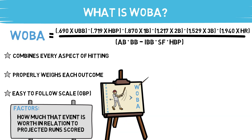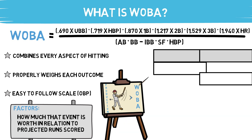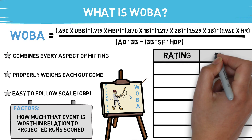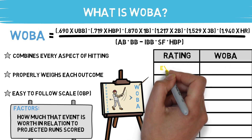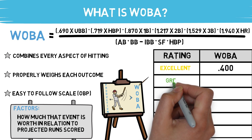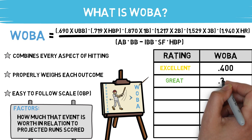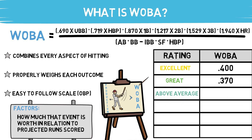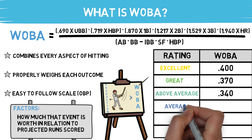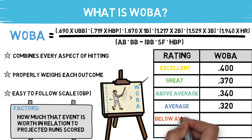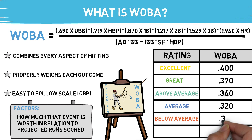To give you an idea where athletes stand using WOBA, let's take a look at a chart that gives you the projected ratings based on players' WOBAs. Taking a look at the excellent category, you will find guys like Christian Yelich and Mike Trout in 2019. Move down to the great category, and this is hitters like Nolan Arenado and Anthony Rizzo. Down to your above-average category, we have guys like Bryce Harper and Ronald Acuña Jr. This helps paint a picture for the caliber of athletes within each category. The WOBA scale is a set scale that gives you a great idea of the overall production of a player.